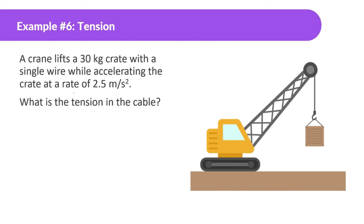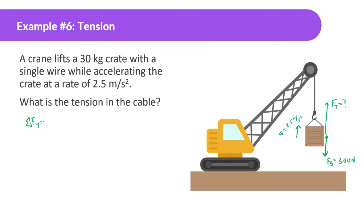Let's look at the next example. A crane lifts a 30 kilogram crate with a single wire while accelerating the crate at a rate of 2.5 meters per second squared. What is the tension in the cable? It's lifting this up, so we know the crate is going to have a force of gravity equal to 30 times 10, which is 300 newtons. It's going to be lifting this up with a certain amount of tension, and the crate is accelerating upward at 2.5 meters per second squared.